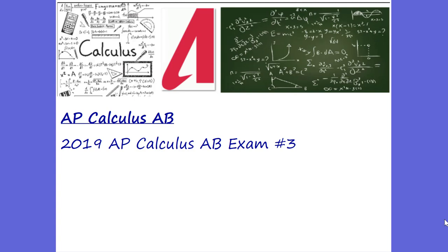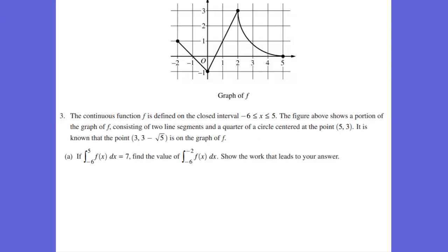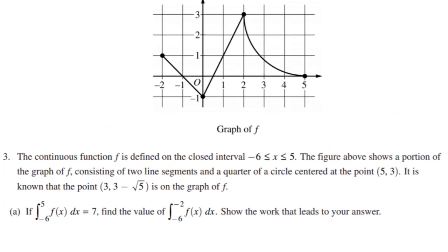Hey, this is Mr. Reid, and this is AP Calculus AB. This is the 2019 AP Calculus AB exam problem number three. We're going to be going through the 2019 exam. We've already been through problems number one and two, which use a calculator, but now we get to the part of the exam where we don't use a calculator. This is going to be all of our hard work without a calculator.